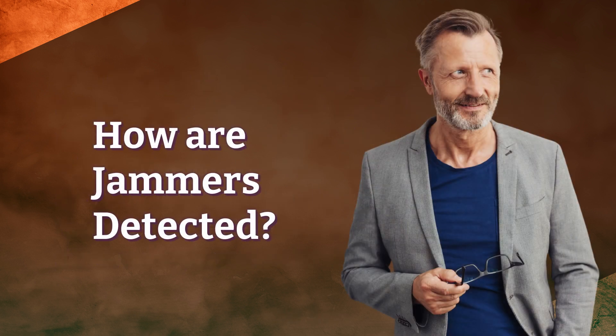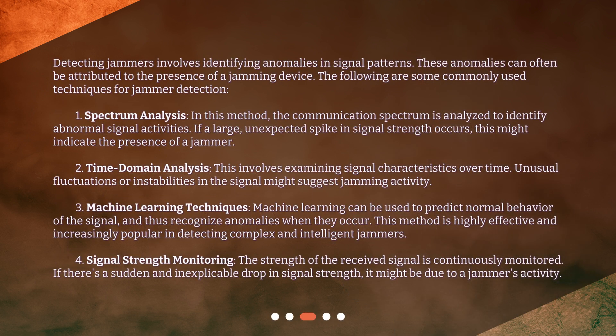How are jammers detected? Detecting jammers involves identifying anomalies in signal patterns. These anomalies can often be attributed to the presence of a jamming device. The following are some commonly used techniques for jammer detection. 1. Spectrum analysis.